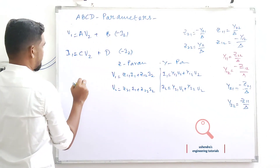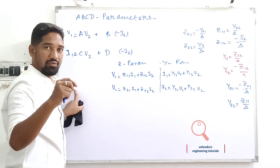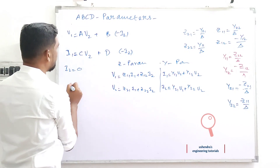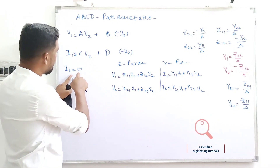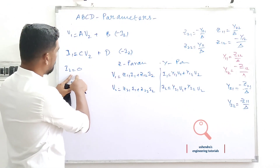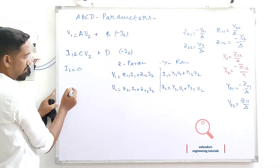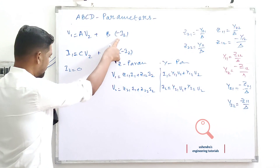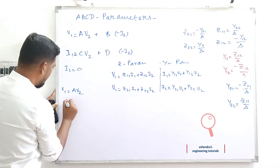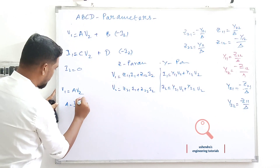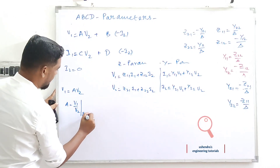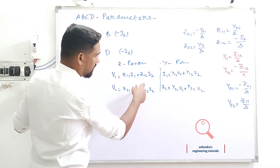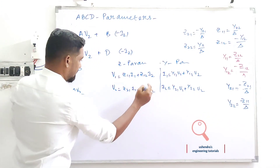Now, deriving ABCD parameters in terms of Z parameters: when the output is open-circuited, I2 is made zero. With I2 = 0, from the first ABCD equation we get V1 = A·V2, so A = V1/V2 with the condition I2 = 0.